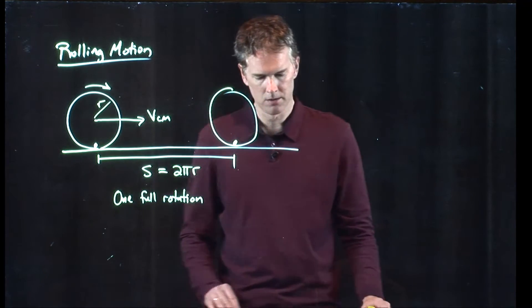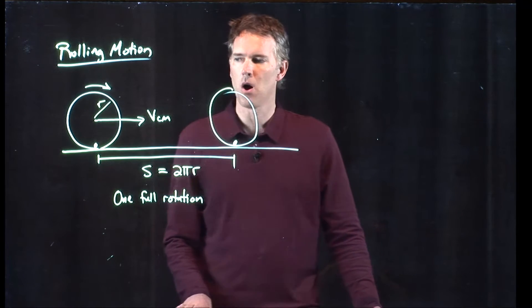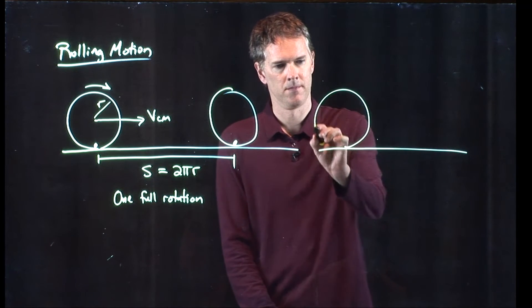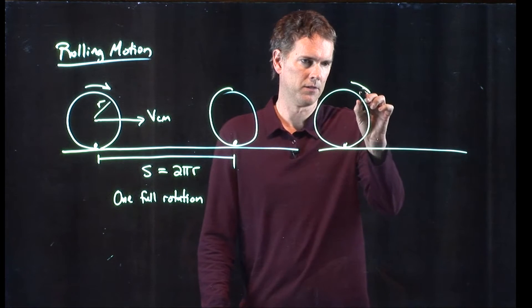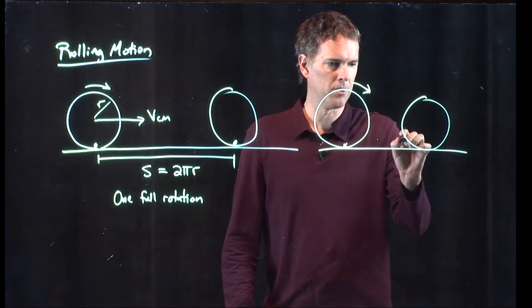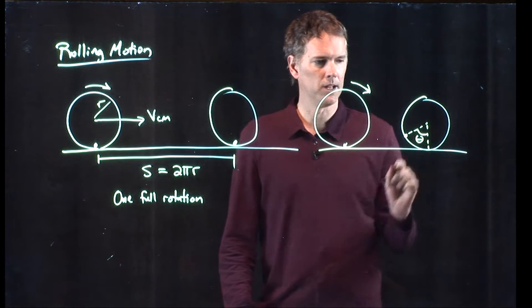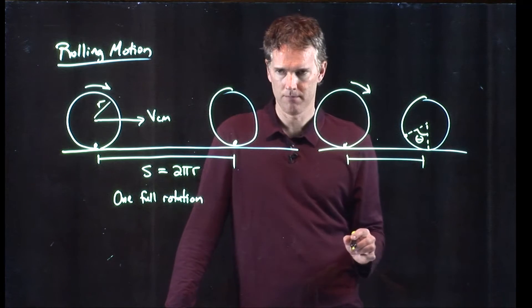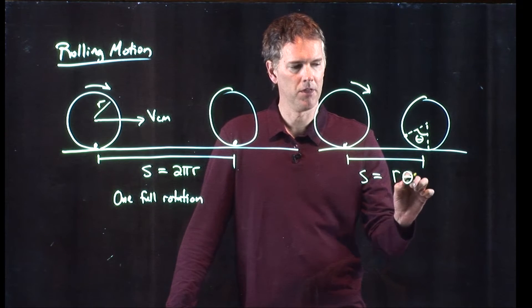But let's say we don't go one full rotation. Let's say we go some smaller amount. This thing is going to roll along and now we've gone some other amount, which we don't know exactly what it is yet, but let's call it theta. How far has that wheel gone?